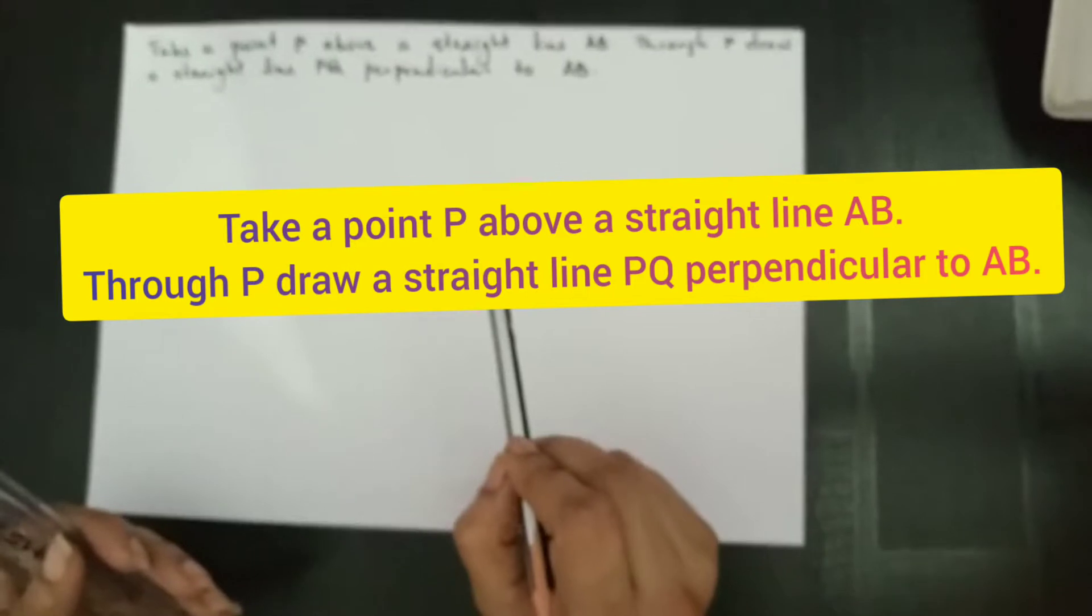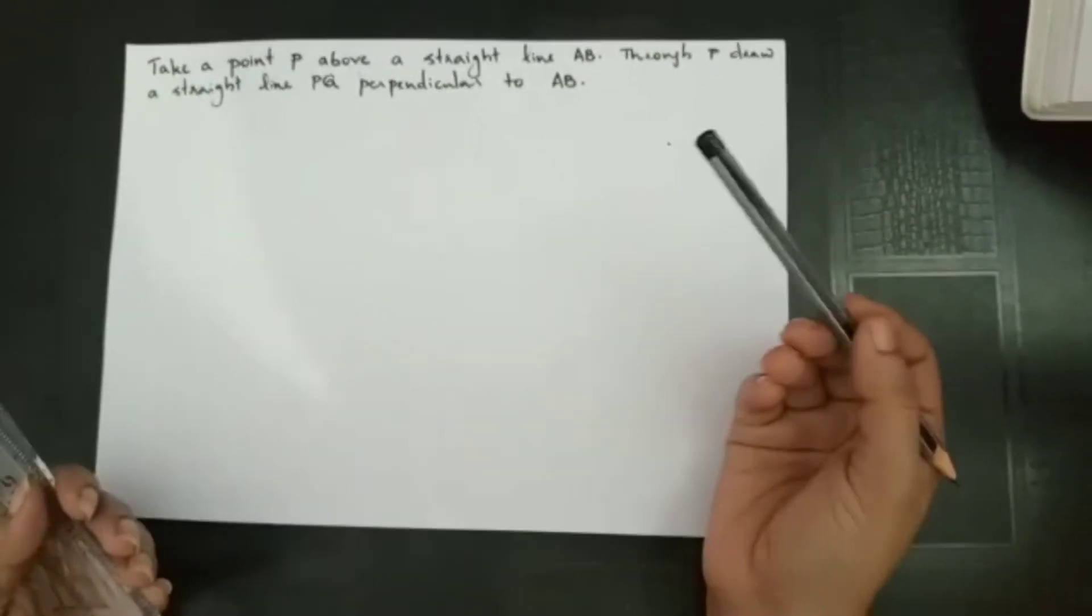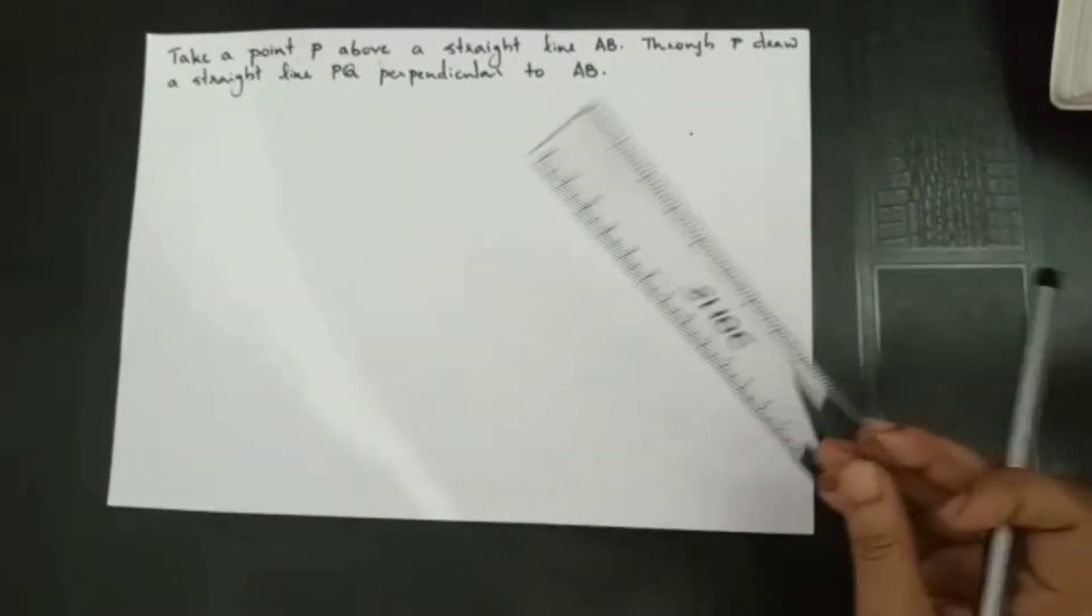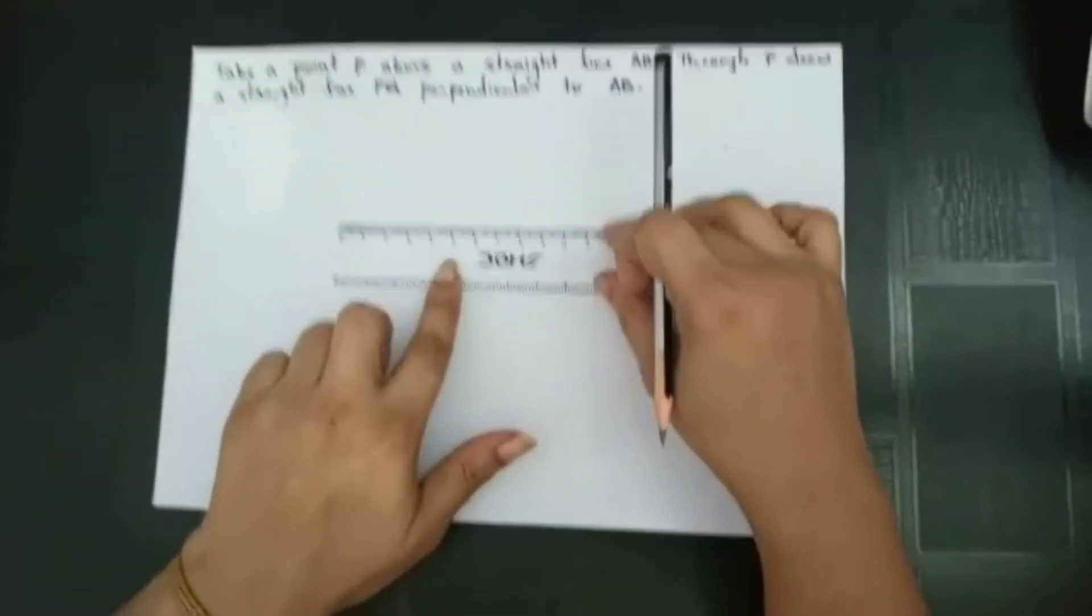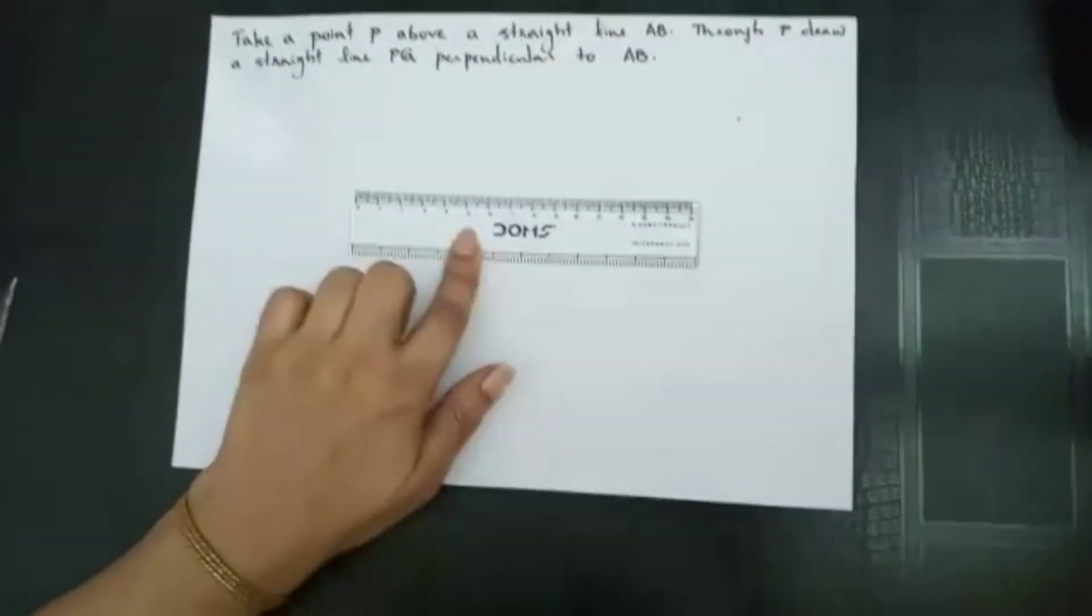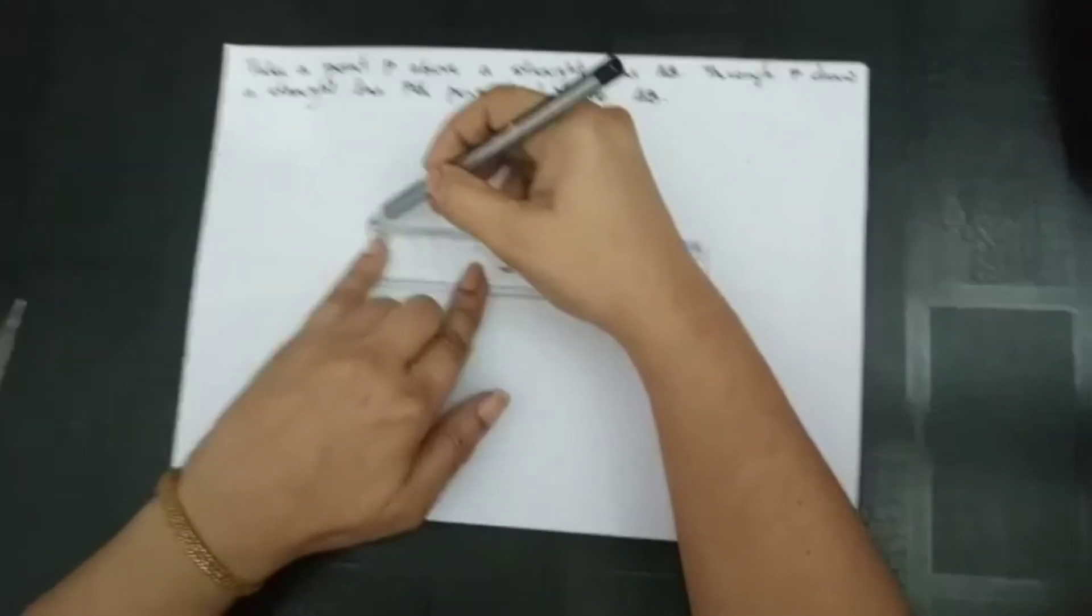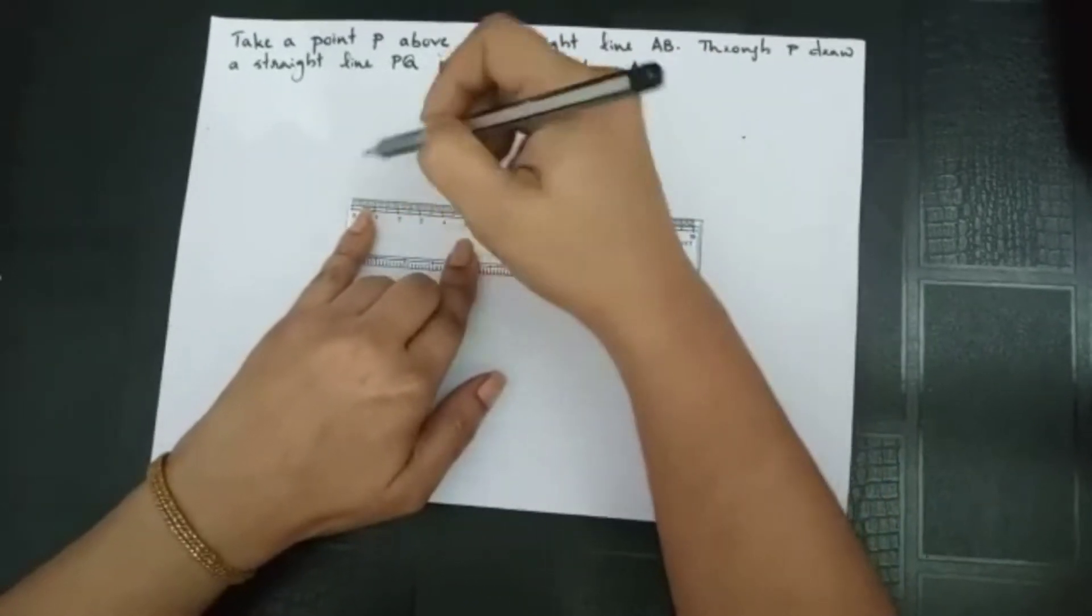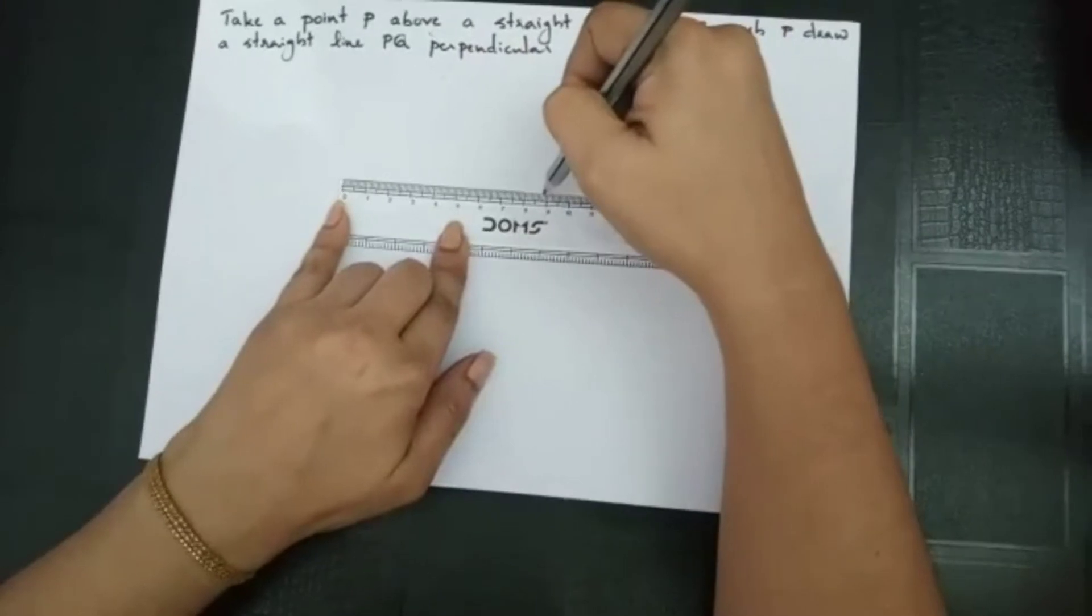So in this question, we have a straight line AB and its length is not given, which means we can make any length. So here I am going to draw a line segment of 8 cm. To draw an 8 cm line segment, we have to start from 0 to 8. If you are starting from 1, 1 to 9, you can draw.